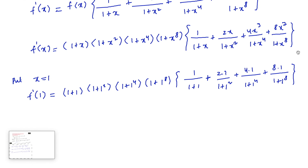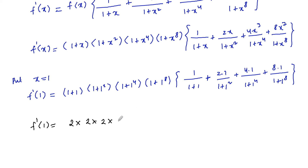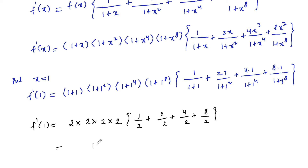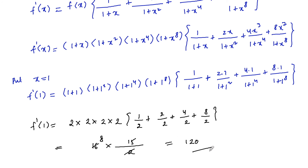We get f'(1) = 2×2×2×2 × [1/2 + 2/2 + 4/2 + 8/2] = 16 × (1+2+4+8)/2 = 16 × 15/2 = 8×15 = 120. So f'(1) = 120.